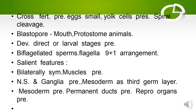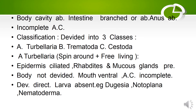Black biflagellated sperms are present; flagella have a 9+1 arrangement. Salient features of this phylum: bilaterally symmetrical animals, muscles are present, nervous system and ganglia are present, mesoderm is present as the third germ layer, and permanent ducts are present in reproductive organs.